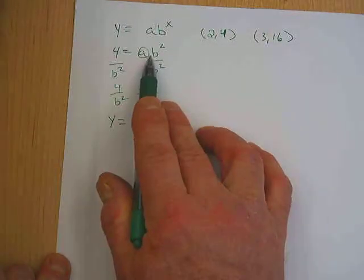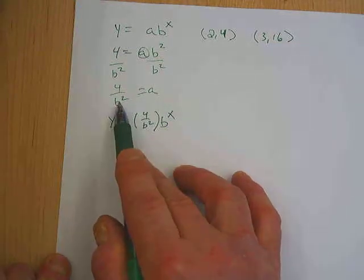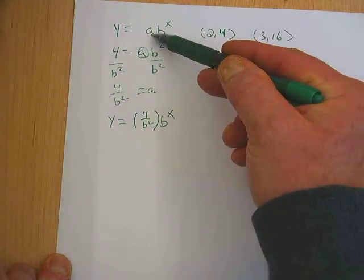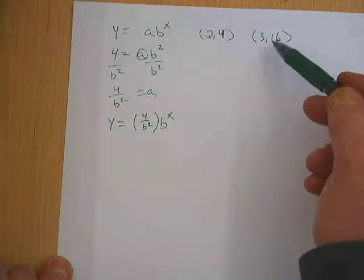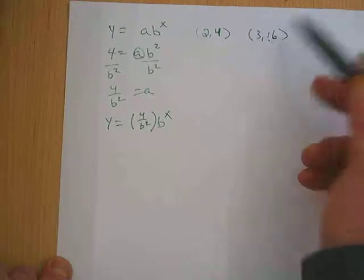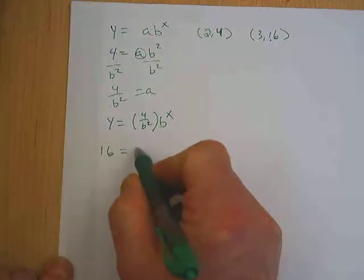So I plugged in an x and a y value, solved for a in terms of b, replaced a with what I figured it out to be in terms of b. Now I need to use my other point and replace x and y.